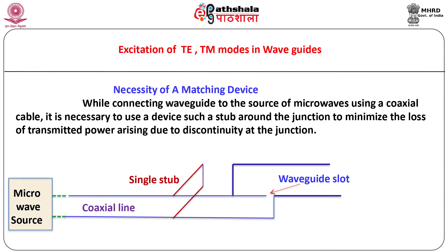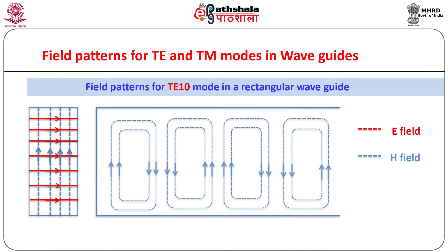When connecting a waveguide to the source of microwaves using a coaxial cable, it is necessary to use a device such as a stub around a junction to minimize the loss of transmitted power arising due to discontinuity at the junction. One important aspect associated with electromagnetic waveguides is the patterns of E and H fields corresponding to different modes. We can plot such patterns using mathematical expressions for components of E and H for the desired mode, considering vertical cross-sectional and longitudinal views. For example, see the field patterns for TE10 mode in a rectangular waveguide.